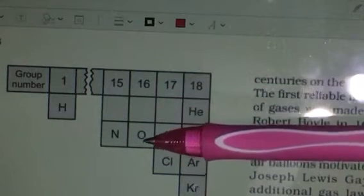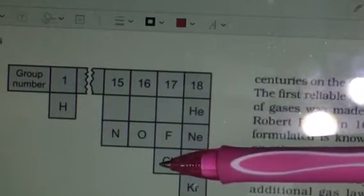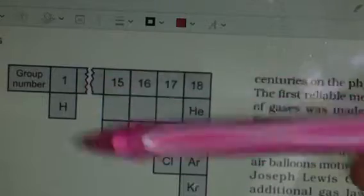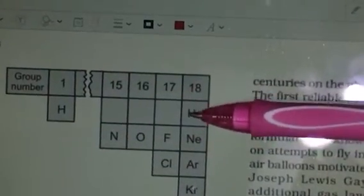Oxygen of 16th group may exist as O2 or O3 ozone. Fluorine F2, chlorine Cl2. These are all reactive gaseous substances and inert gases which belong to 18th group.